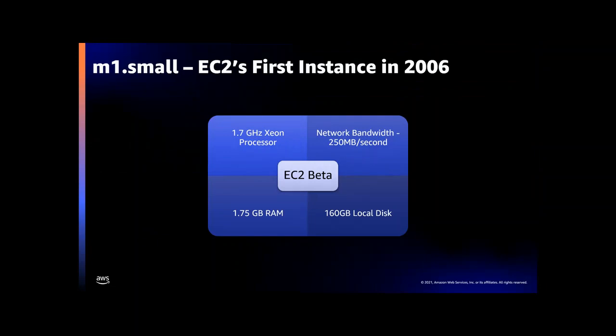But first, a little history. On August 25th, 2006, we started the public beta of our first ever EC2 instance. Back then it didn't even have a name, but we dubbed it M1 small later on. In general, M and T instances are general purpose, C is compute optimized, R is memory optimized, and I and D are storage optimized — so M1 small is a small general purpose instance. It provides the equivalent of a 1.7 GHz Xeon processor with 1.75 gigs of RAM, 160 gigs of local disk, and 250 megabits per second of network bandwidth, all at just 10 cents an hour on demand.